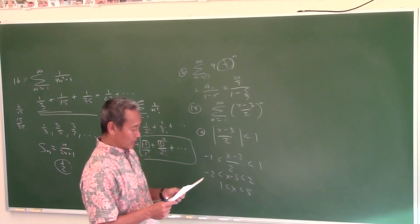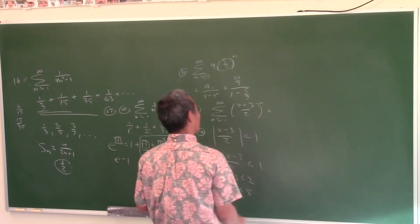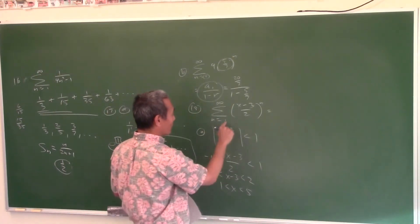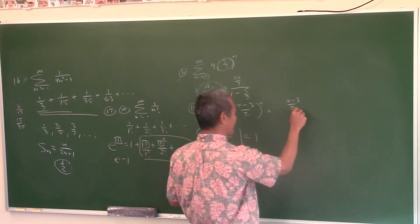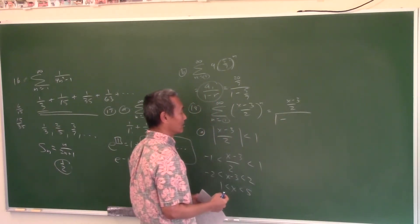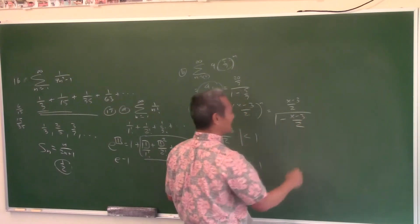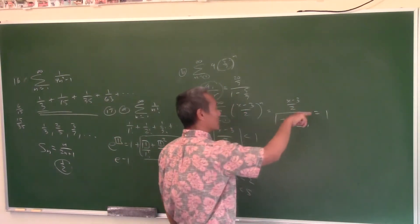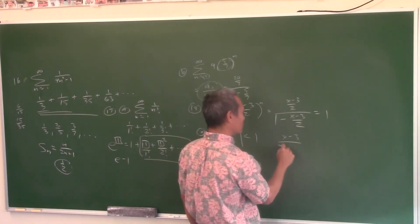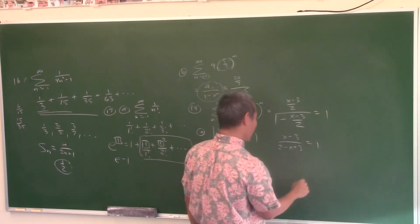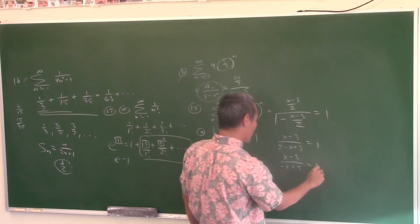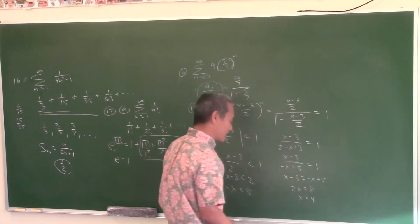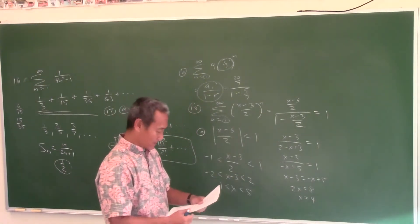For what value of x does the series equal 1? This is geometric, so use first term over 1 minus r. The first term (plugging in n=1) is (x minus 3) over 2, all over 1 minus r. Set that equal to 1. Multiply top and bottom by 2 — don't forget to distribute the minus sign — giving (x minus 3) over (negative x plus 5) equals 1. So x minus 3 equals negative x plus 5, giving 2x equals 8, so x equals 4. Confirm it's in the interval of convergence — it is.